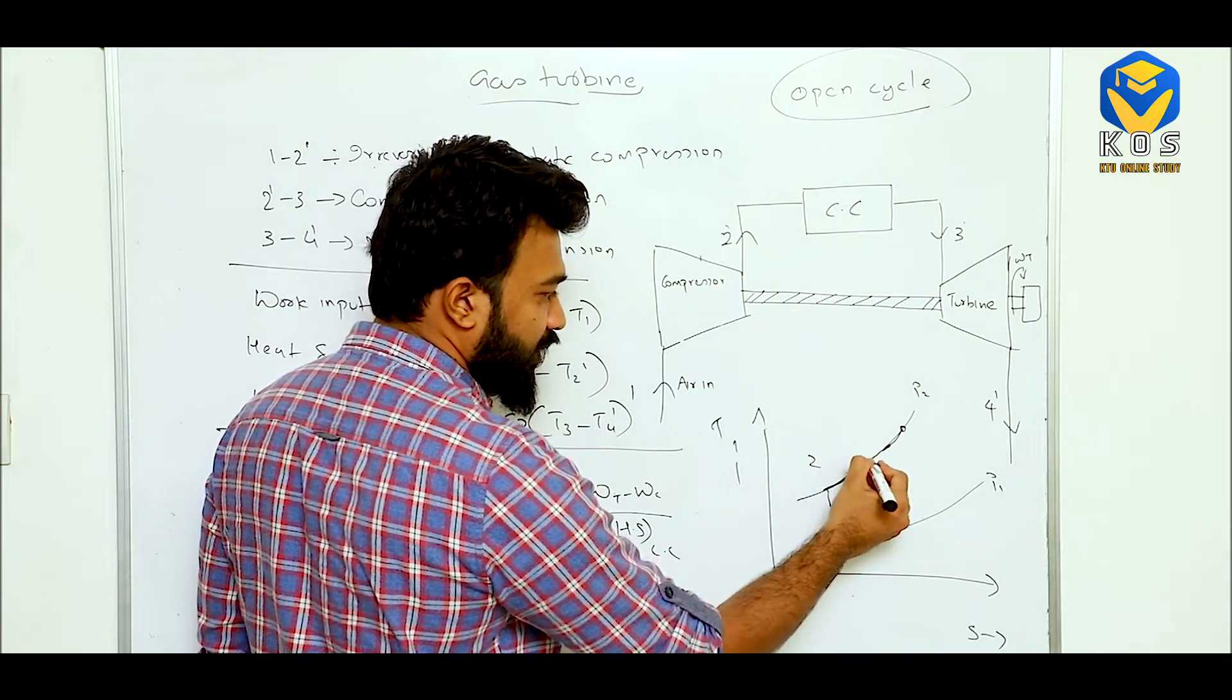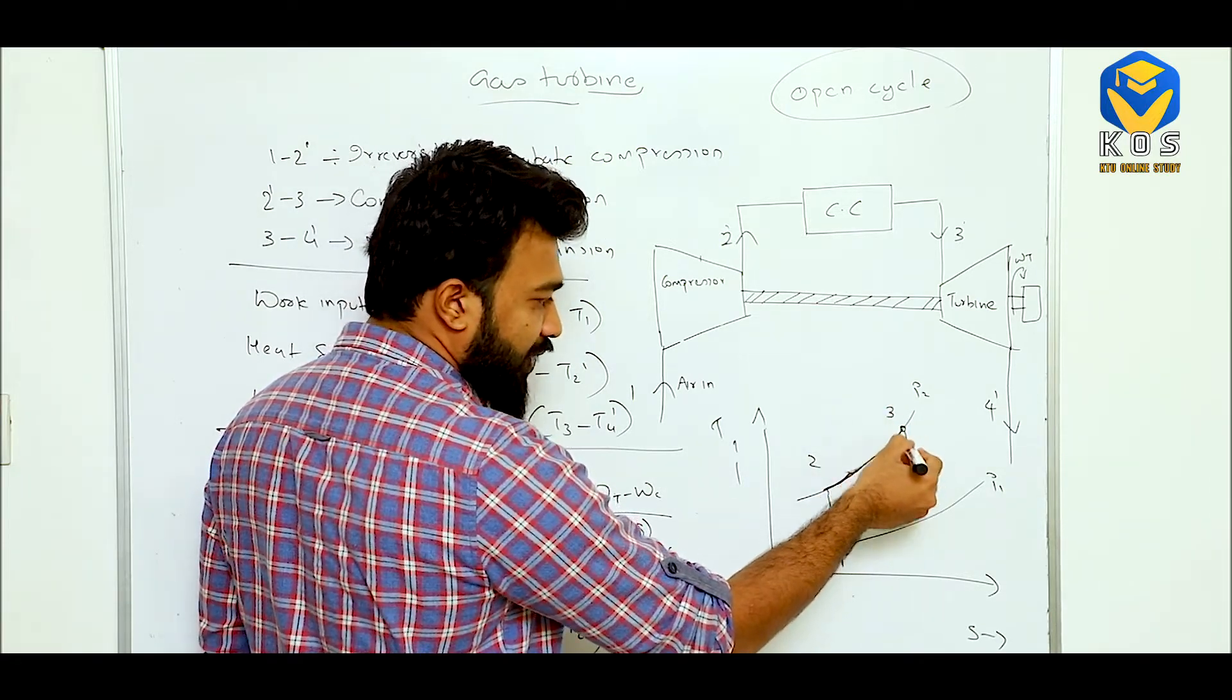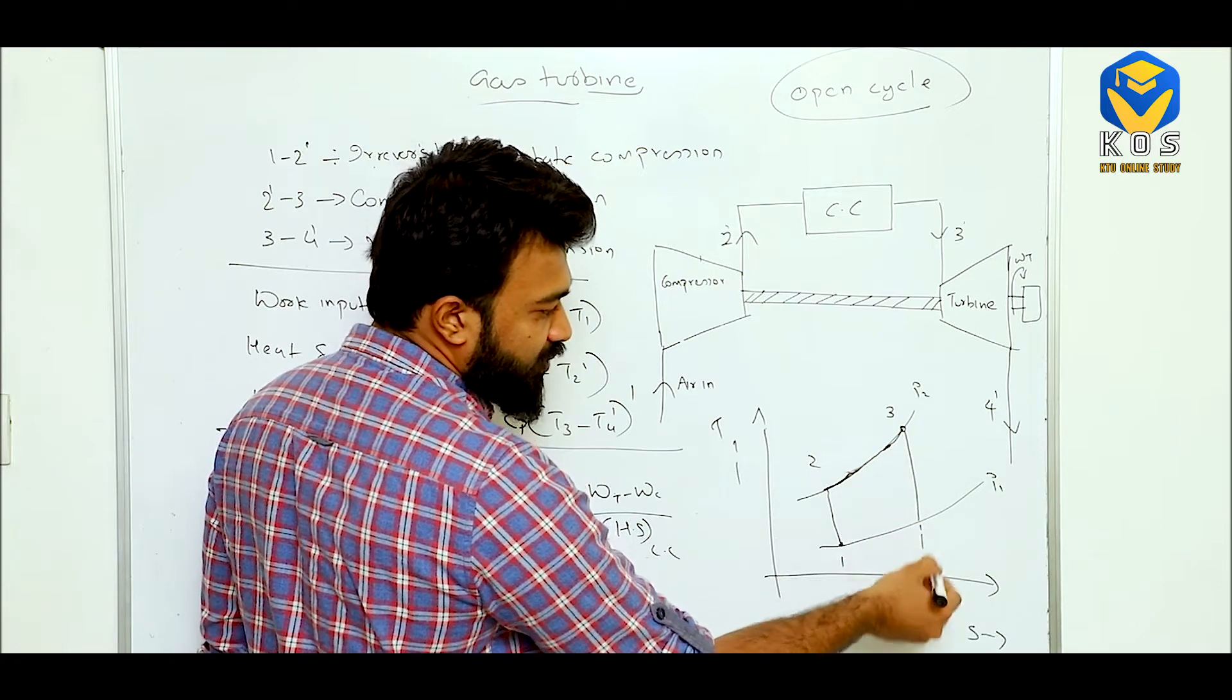Up to 0.3 heat is added and it is expanded. If it is a reversible process, this is an isentropic expansion.